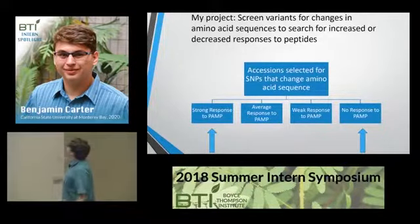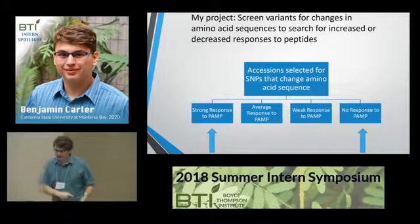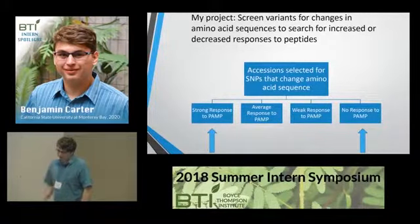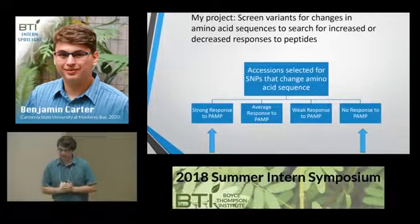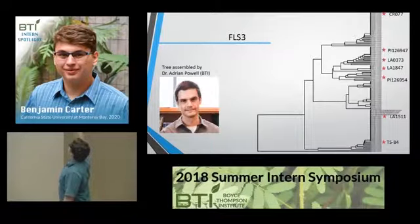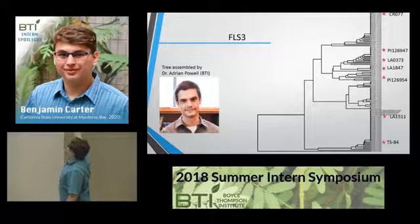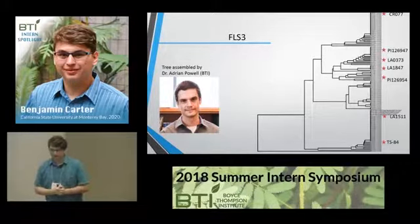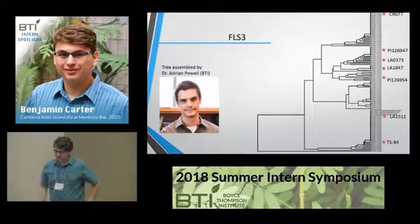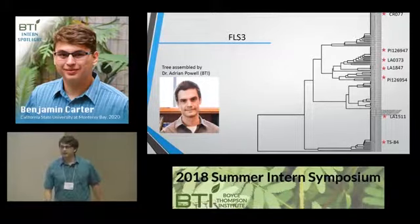To figure out which variants to screen, a variant-relatedness tree was constructed by Dr. Adrian Powell for each gene to help us choose accessions to screen. We sampled accessions from each cluster and grew them for four weeks. I sampled leaf disks from these plants and placed them in a 96-well plate and let them sit in water overnight.